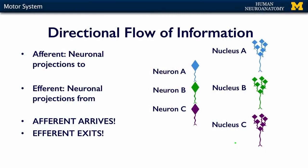In this series of lectures, we're going to talk about motor systems. I want to draw your attention and remind you of the directional flow of information within the nervous system, whereas afferent is arriving information, and that's when mostly we think of sensory. In this cluster of lectures, we're going to talk about efferent, or exiting information, which is mostly motor.